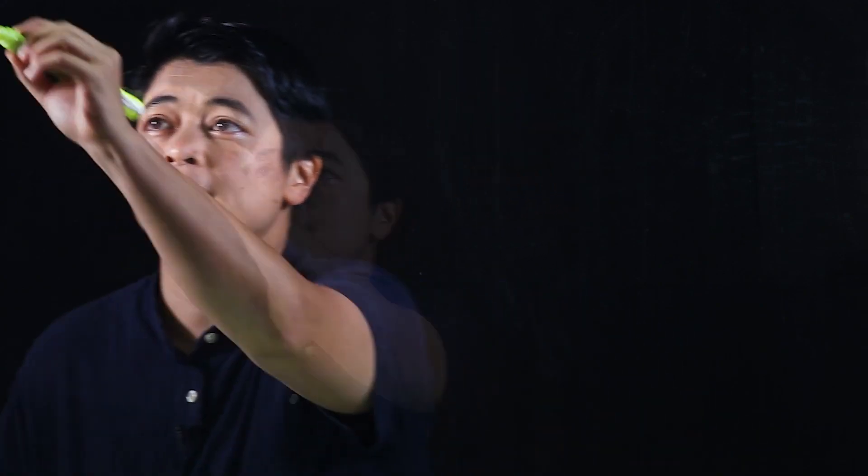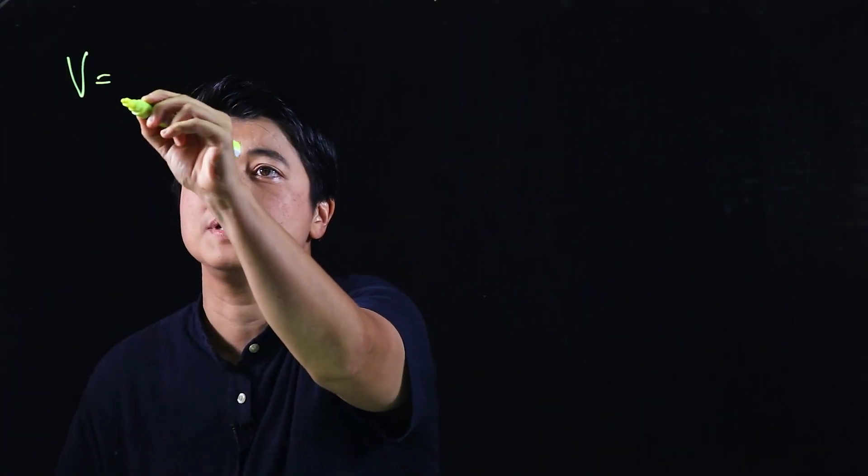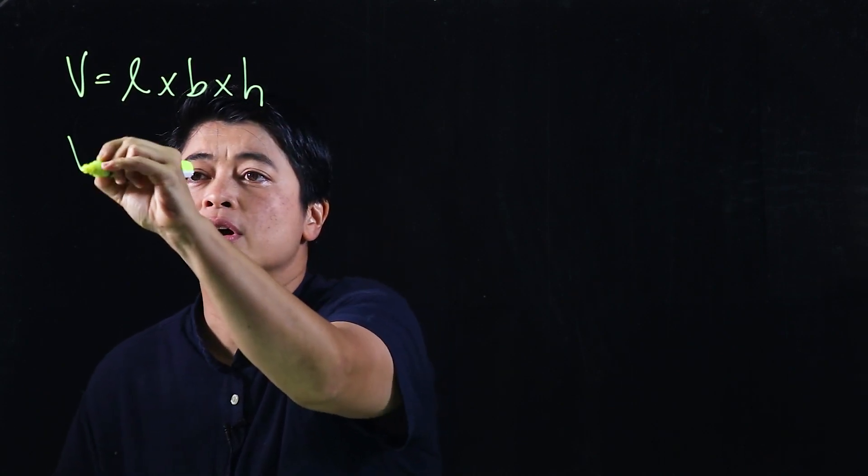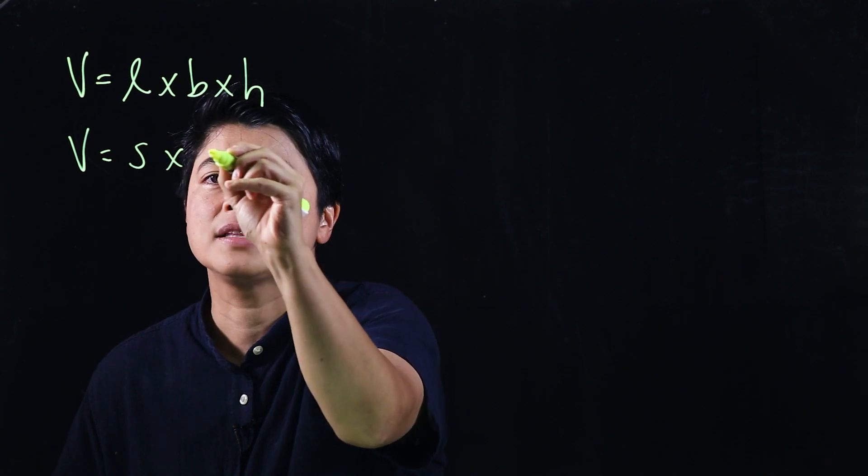Chapter 8, Lesson 4 is volume of liquids. In the last lesson we were finding the volume of a solid; now we're putting liquid into the solid. The formula will still remain the same because it's the same volume — either volume equals length times breadth times height, or volume equals side times side times side.